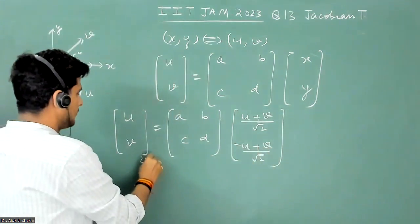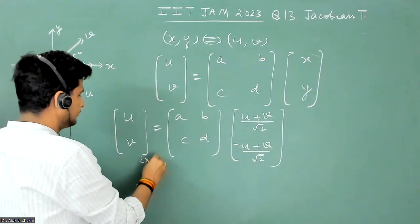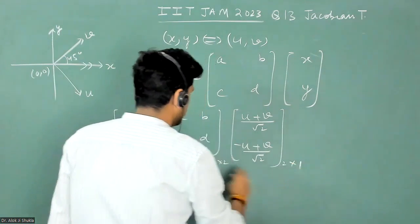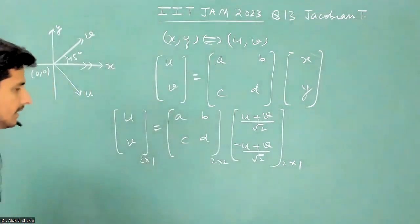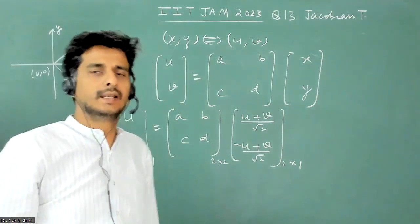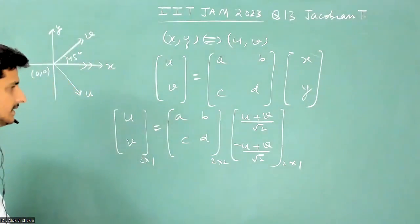So now this is two cross two. This is two cross one. This is two cross two. And this is two cross one. So when I multiply these two, I will get again two cross one and then I will compare the terms and get the value of a, b, c, d.